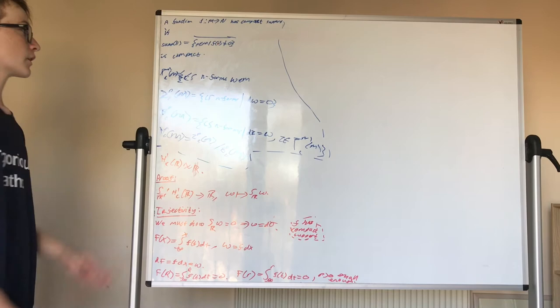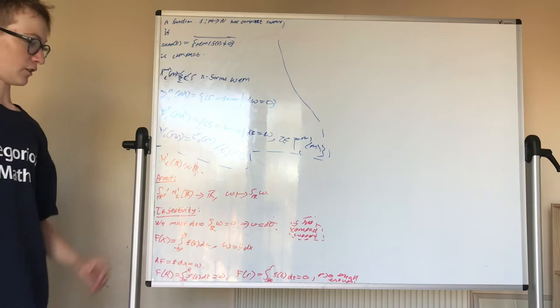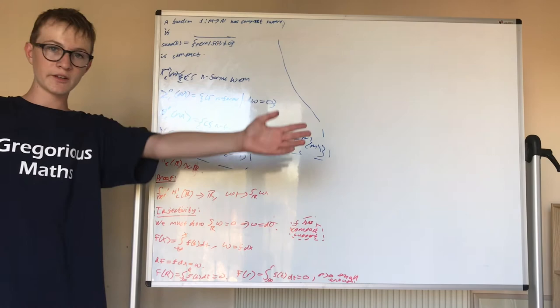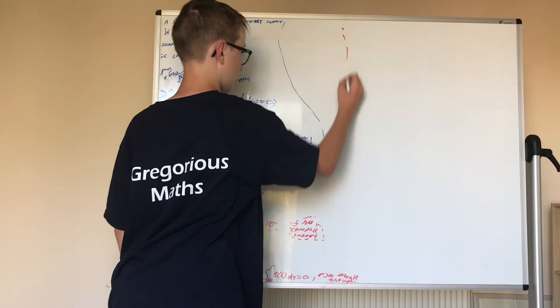Because this is bounded. So the set of points such that this function is not equal to zero is bounded. Therefore, when we pick R big and small enough, we have areas where the function is just equal to zero. All right, nice.